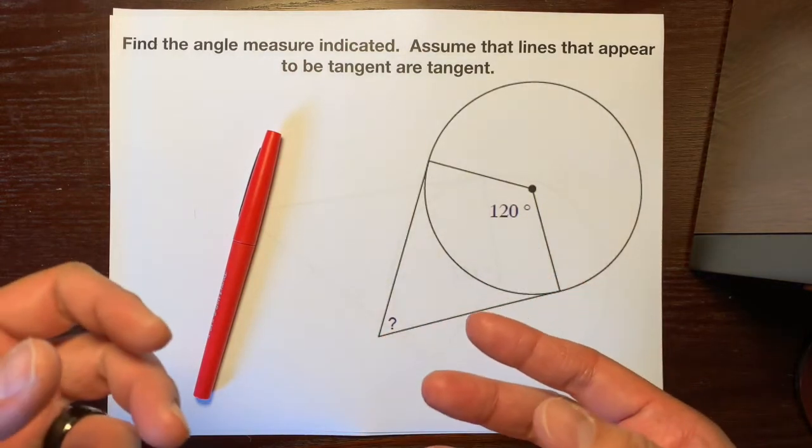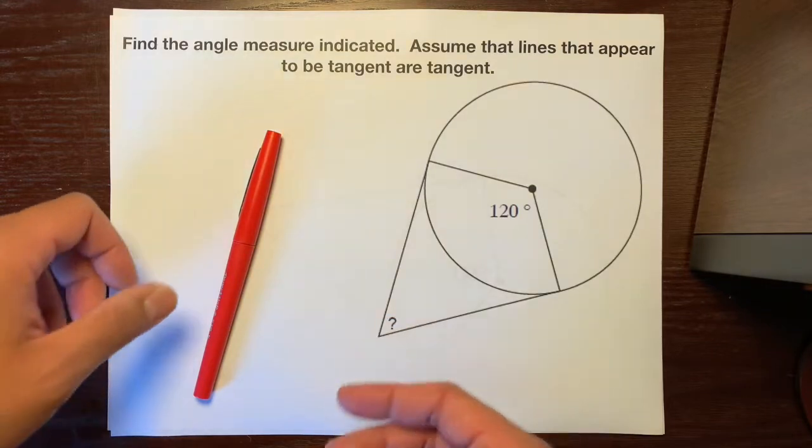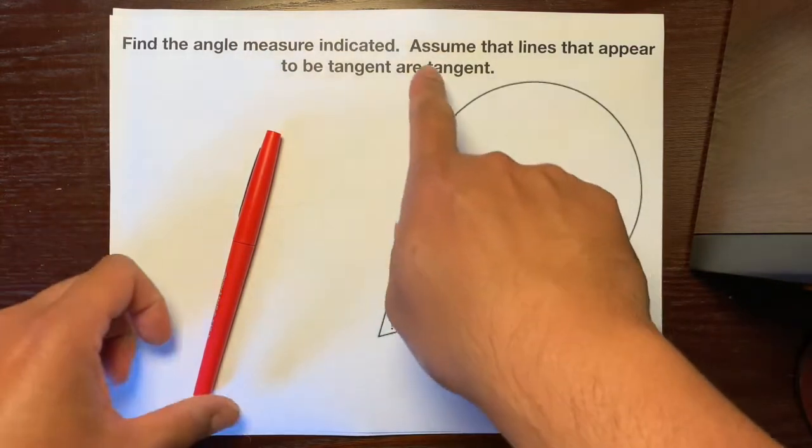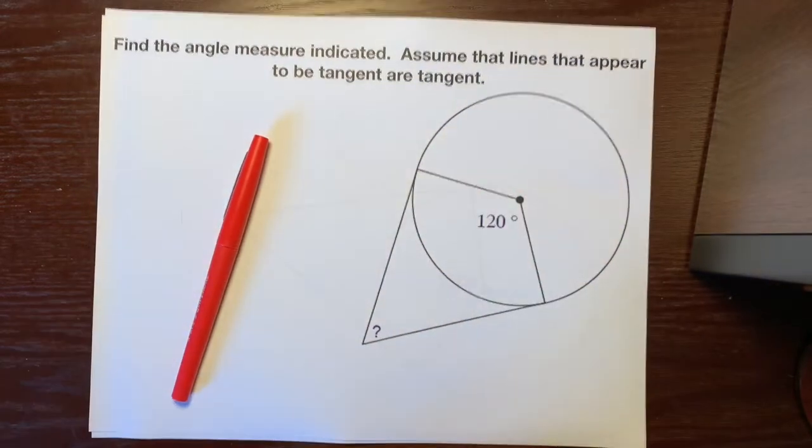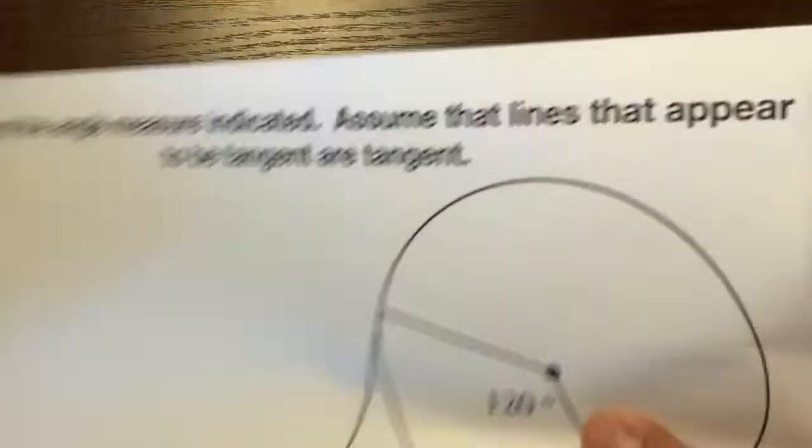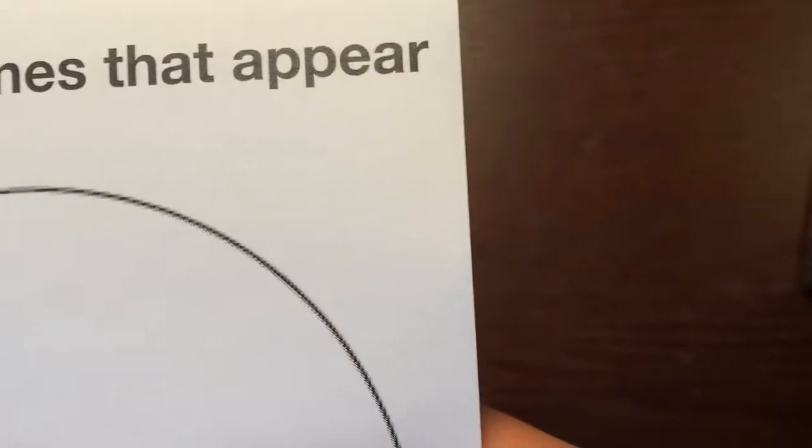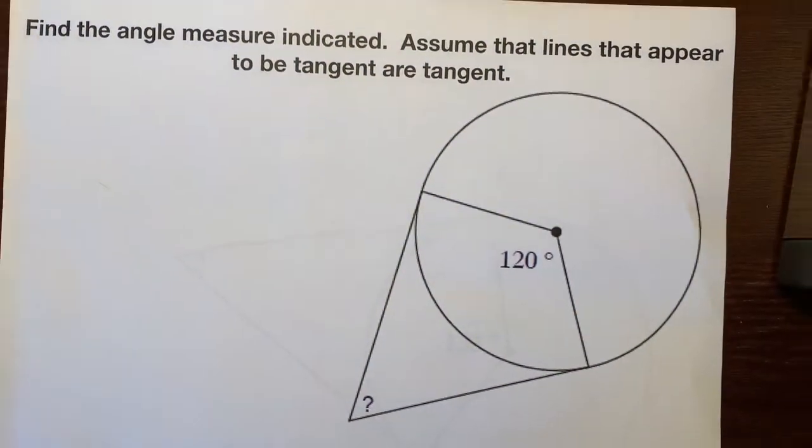Now, the biggest hint right here, which a lot of people ignore, is that it says assume that lines that appear to be tangent are tangent. That is your biggest hint.